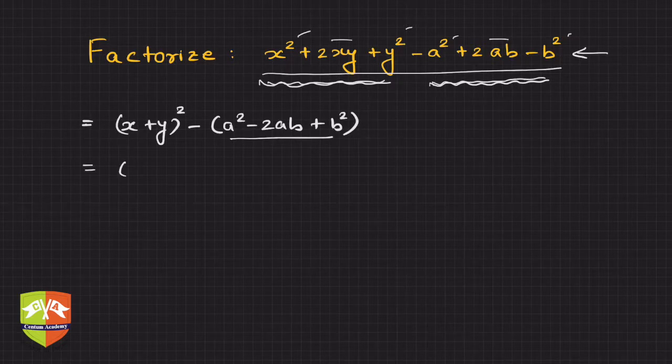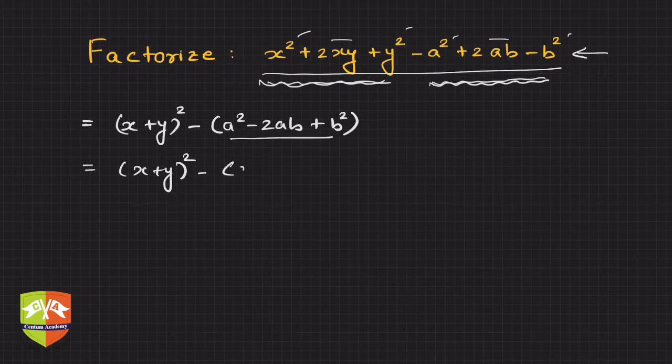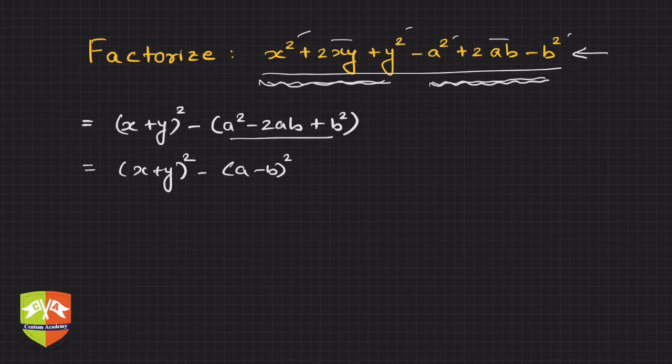So what next? Clearly, this will be nothing but (x + y)² - (a - b)². So you must be very, very thorough with the algebraic identities to solve such problems.